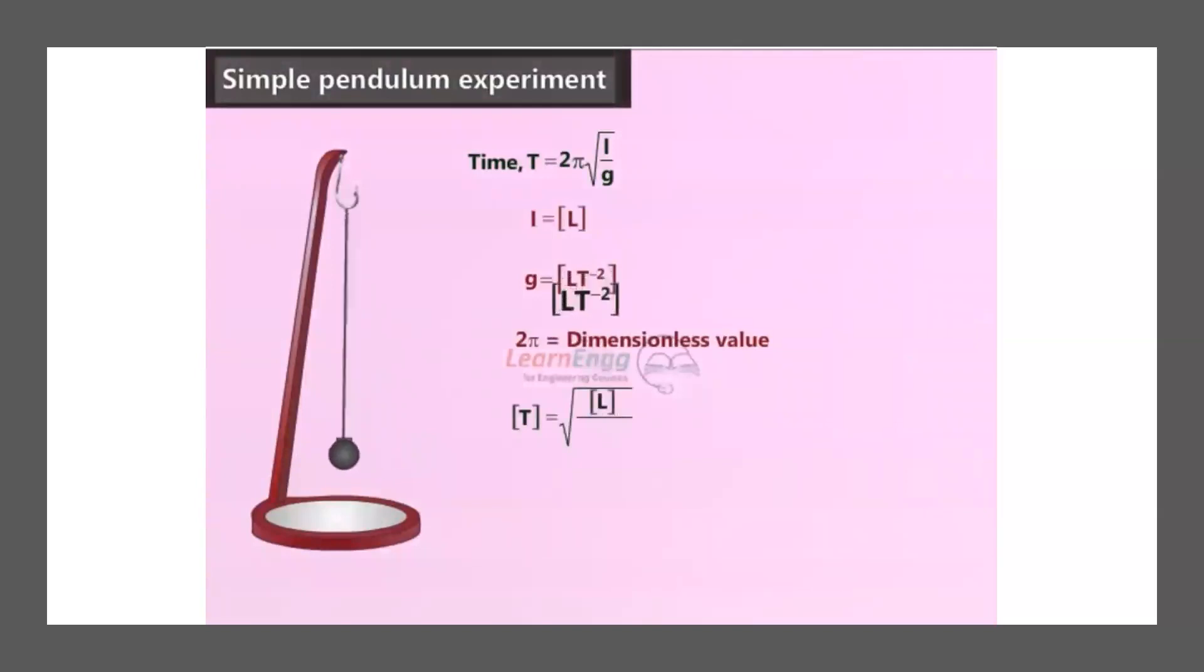If you are substituting the dimensions in the above equation, on the left hand side the dimension is [T], and on the right hand side the dimension is [L]/[LT⁻²] to the power of half. So in the right hand side, if you are simplifying the equation, you will be getting [T]. Left hand side also dimension [T], right hand side also dimension [T]. So the fundamental dimensions and the respective power should be identical on either side of the equation, then the equation is said to be dimensionally homogeneous.